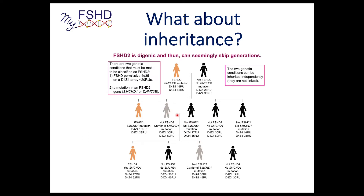If that carrier has children with someone who has no SMCHD1 mutation but the proper-sized D4Z4 chromosome — like a 17 repeat unit — you can have two healthy people produce an FSHD2 child. It appears the disease skipped a generation, but actually the SMCHD1 mutation did not skip the generation. It was the other part of the digenic requirement that skipped.